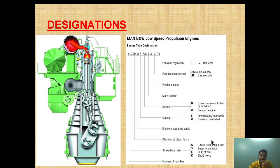Most of the MAN B&W engines are of S series and some of them are of G series. In smaller vessels you can find L, but K is now obsolete. After that, 70 is the diameter of the piston in centimetres.